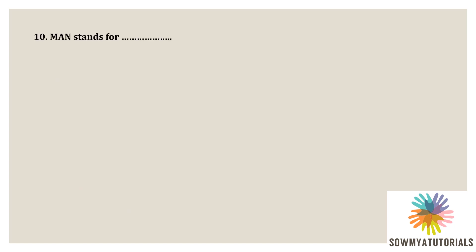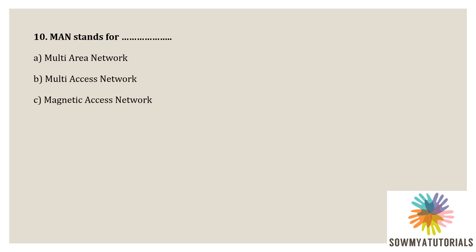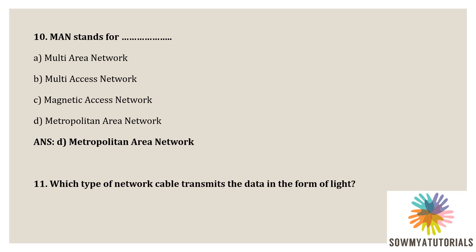Next question: MAN stands for what? Options are option A - multi-area network, option B - multi-axis network, option C - magnetic access network, option D - metropolitan area network. Already I told the expansions of LAN, WAN and MAN. So the correct option is option D, metropolitan area network.